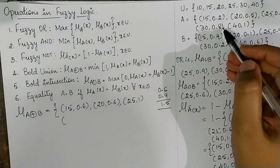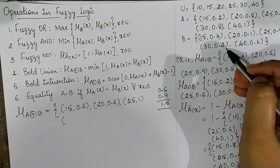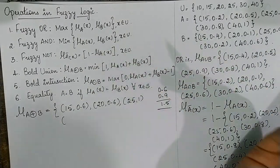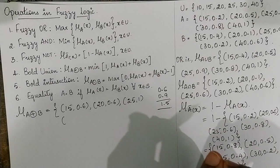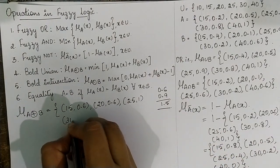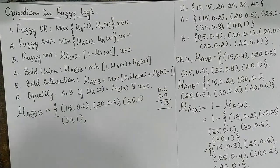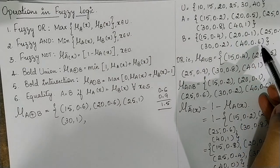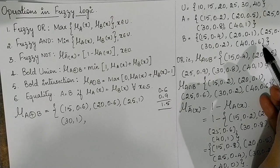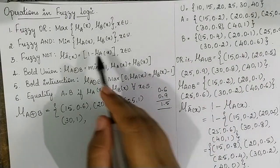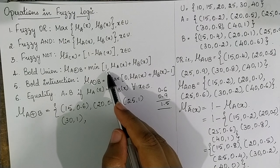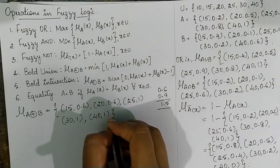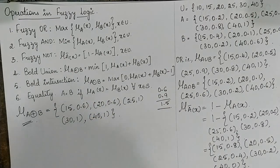For 40: 1+0.6=1.6; compare with 1 — minimum is 1, so 40→1. This is the bold union operation.